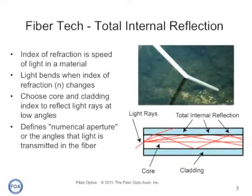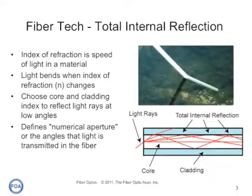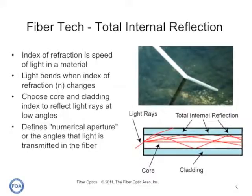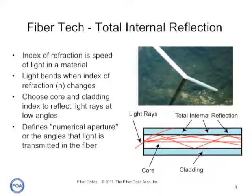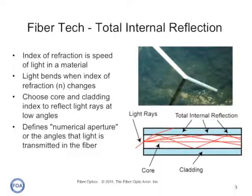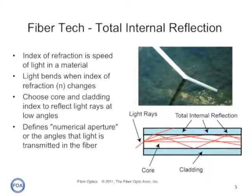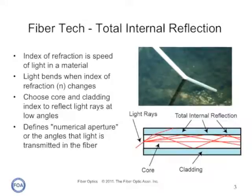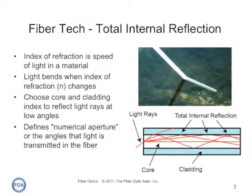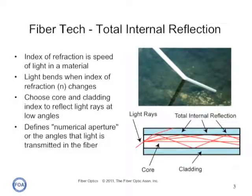The angle of the light changes, and that's what makes a straight stick pushed into the water look as though it's bent. The index of refraction is the speed of light in a material, and if we choose the core and cladding in optical fiber of the proper types of material, the light will be bent toward the core of the fiber at all angles.